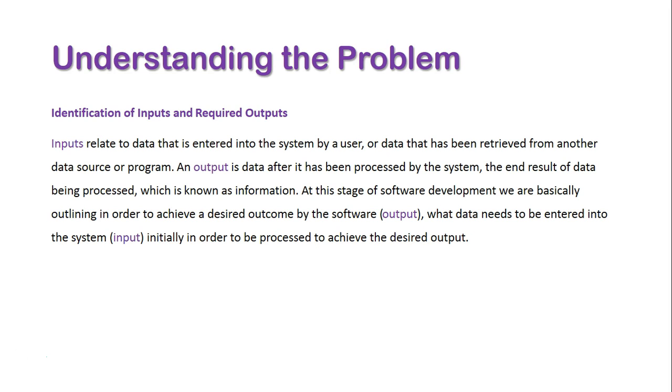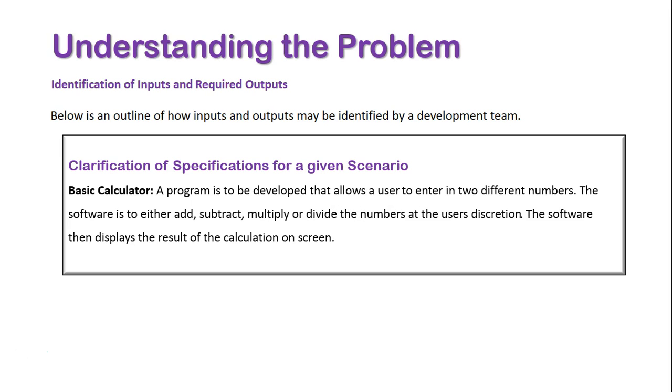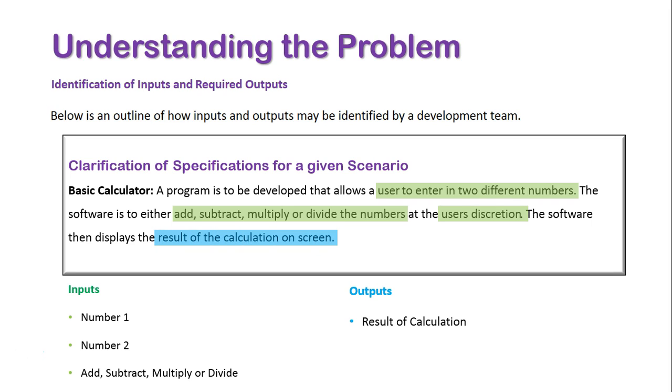Looking at the same calculator example from an input and output perspective: our inputs are the two different numbers the user enters, and the calculation type (add, subtract, multiply, or divide). Our output is the calculation result. So we input two numbers and the calculation type, and the software gives back the result as an output.